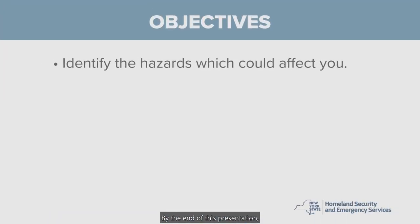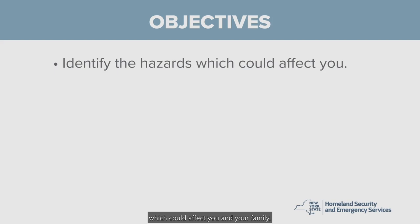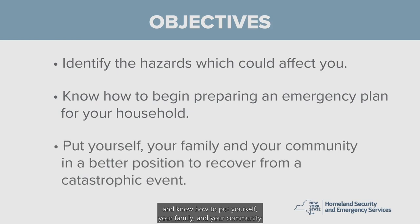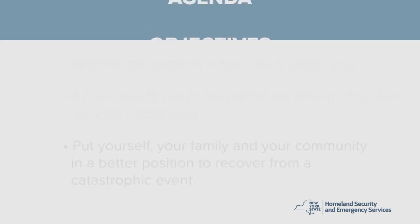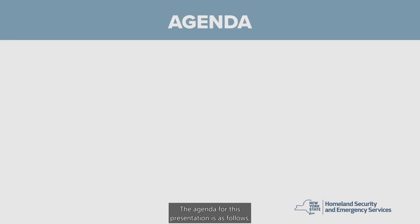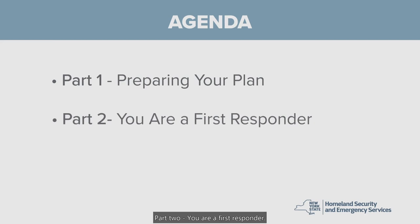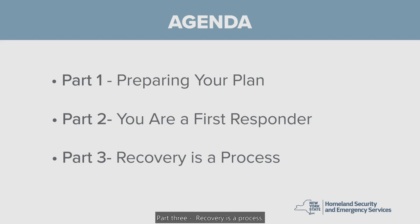By the end of this presentation, you should be able to identify the types of hazards which could affect you and your family, know how to begin preparing an emergency plan for your household, and know how to put yourself, your family, and your community in a better position to recover from a catastrophic event. The agenda: Part 1, Preparing Your Plan; Part 2, You are a First Responder; Part 3, Recovery is a Process.